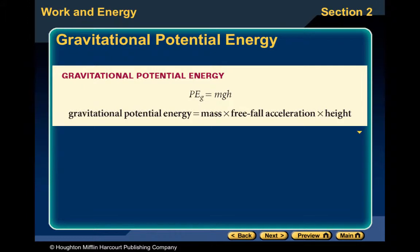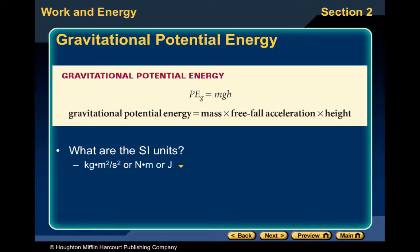Gravitational potential energy — using the subscript g — is equal to mgh: mass times the acceleration due to gravity times the height. The SI units: mass in kilograms, acceleration in meters per second squared, height in meters, giving kilograms times meters squared over seconds squared, or a Newton times a meter, which equals a joule.